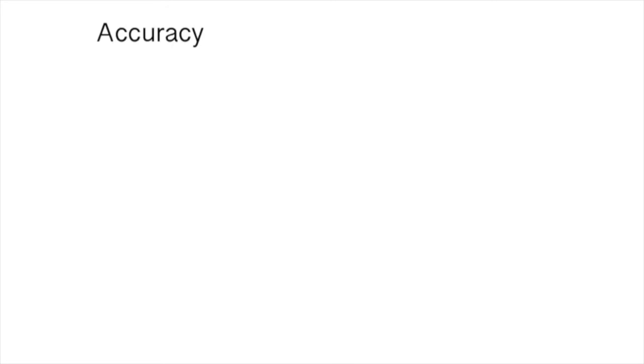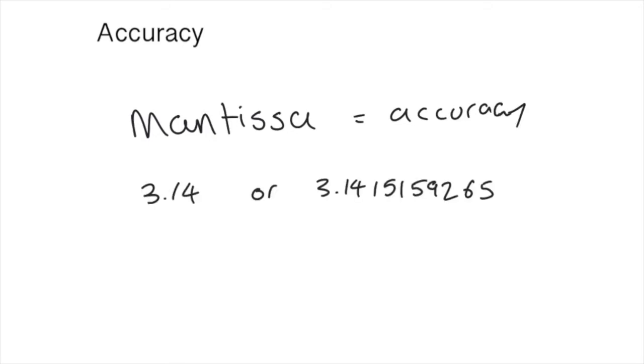When it comes to floating point representation, it's the mantissa which determines how accurate a number is. 3.14 is not as accurate as 3.145159265, so the larger the mantissa, the more accurate the number will be.